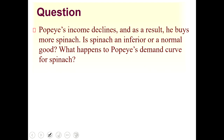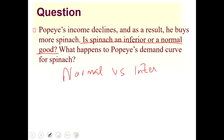The next question: Popeye's income declines and as a result he buys more spinach. Is spinach an inferior or a normal good? The important part is what happens to Popeye's demand curve for spinach. Remember, there are two types of goods: normal and inferior.